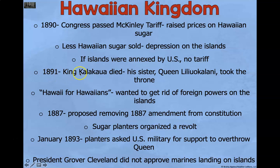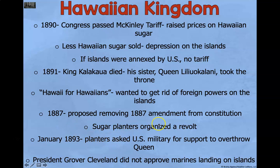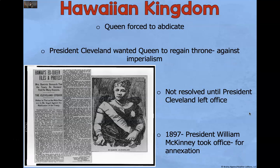In 1891, King Kalakaua died and his sister, Queen Liliuokalani, took the throne. They proposed removing the 1887 amendment from the constitution — Hawaii for Hawaiians. They wanted to get rid of foreign powers on the islands and restore voting rights to everyone. The sugar planters got aggravated and moved to revolt. In 1893, planters asked the US military for support to overthrow the Queen, but President Grover Cleveland did not approve the Marines landing on the island. The Queen was forced to abdicate. President Cleveland wanted the Queen to regain her throne — he was not for imperialism.